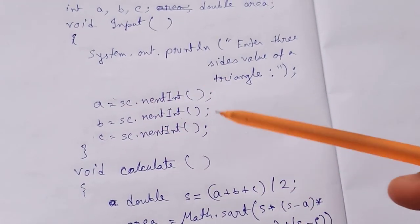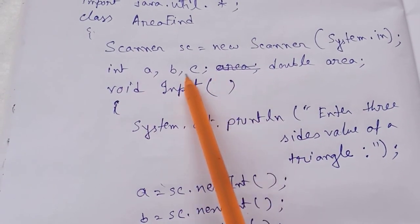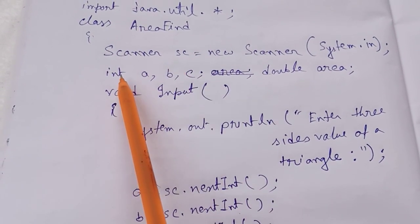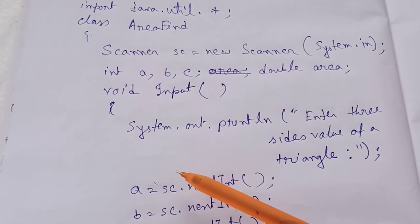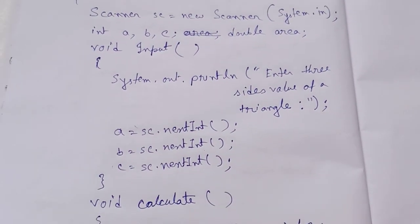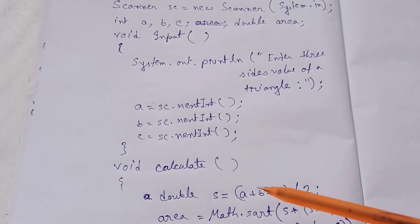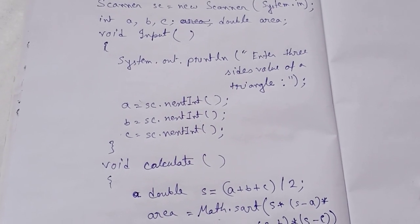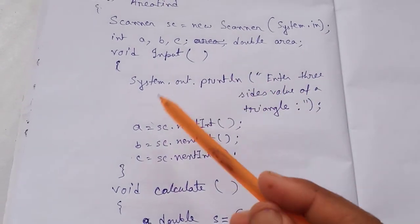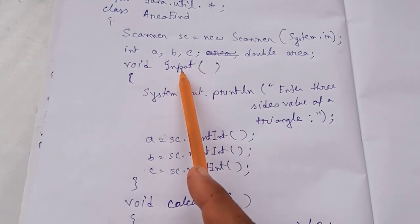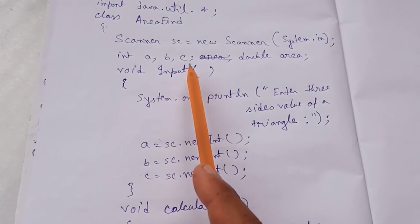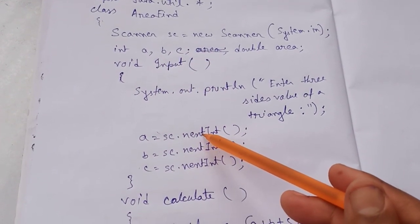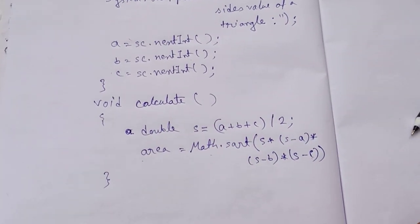One important thing: I am taking input in one method and doing calculation in another method. How do we get the values of a, b, c in another method? Due to global variables. If you declare a, b, c inside the input method, you cannot use them in another method, because we cannot use local variables across different methods. So we declare int a, b, c as global variables so they can be accessed in both the input method and the calculate method.